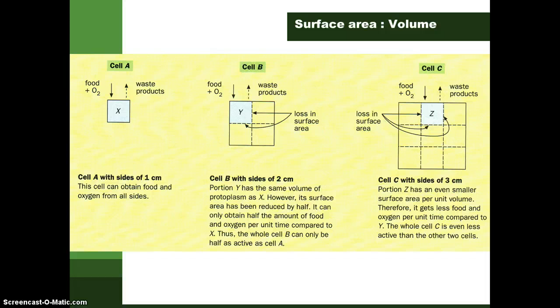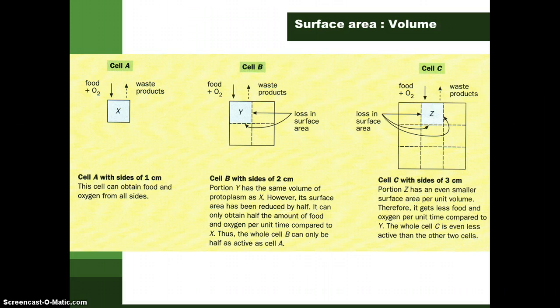Finally, regarding the surface area to volume ratio: cells with a high surface area to volume ratio tend to have a higher absorption rate — whether of oxygen, food, or waste products — compared to cells with a bigger overall size. Cell C, which is larger, has a very small surface area to volume ratio and therefore a lower absorption rate.